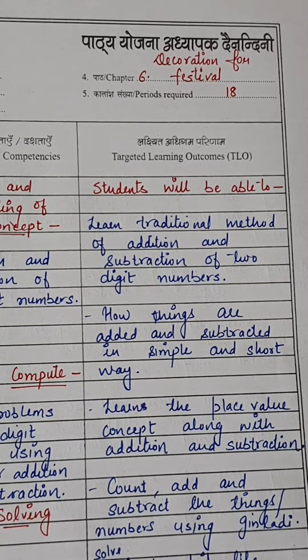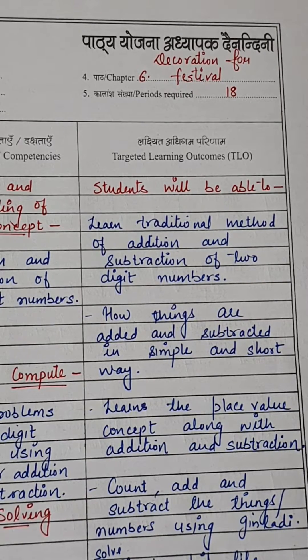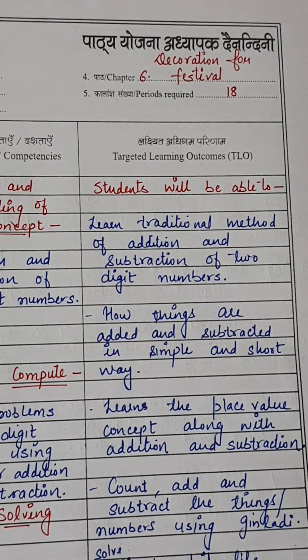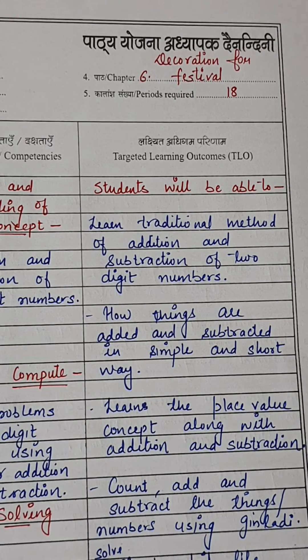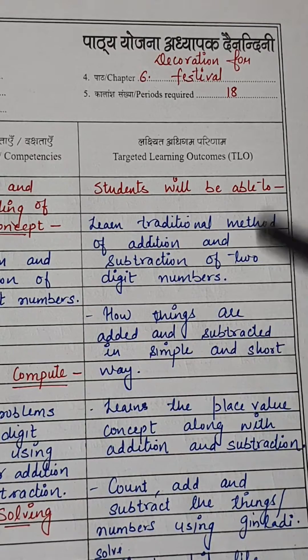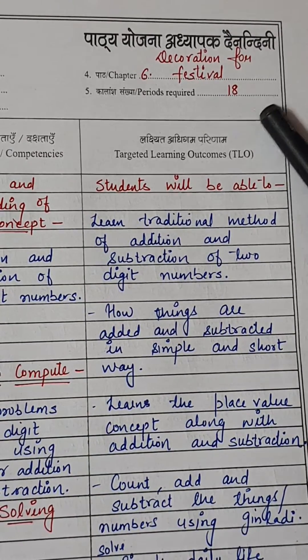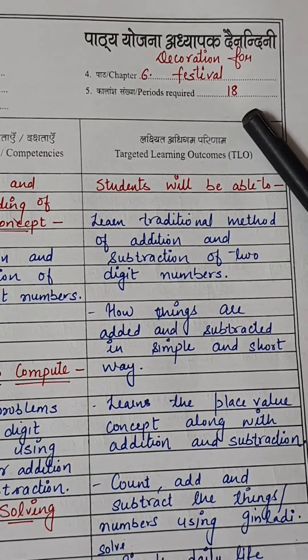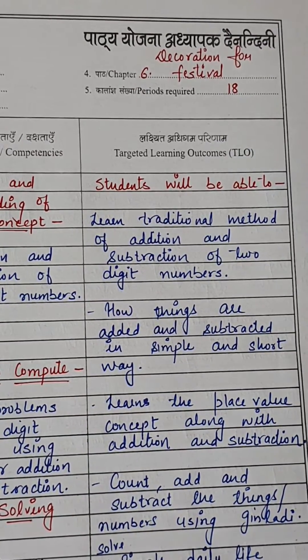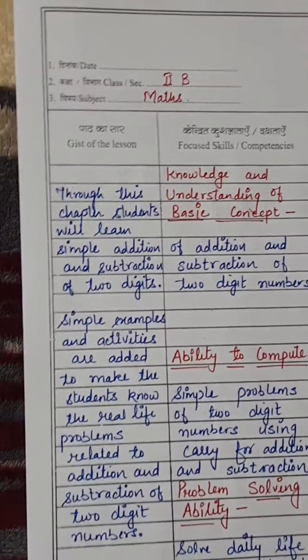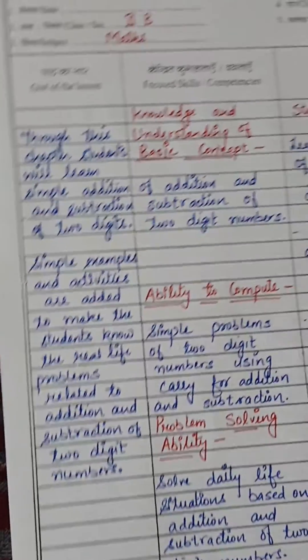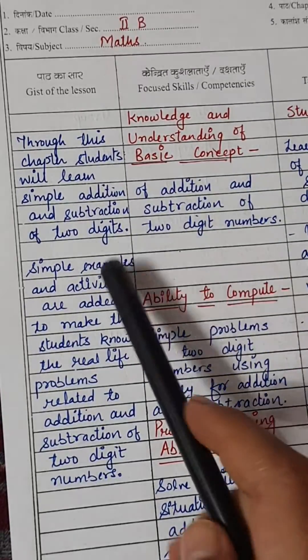Hello dear teachers, welcome to my channel. Let's talk about the lesson plan for Class 2 Maths, Chapter 6: Decoration for Festival. We need 18 periods for this chapter. Let's see the gist of the lesson first.